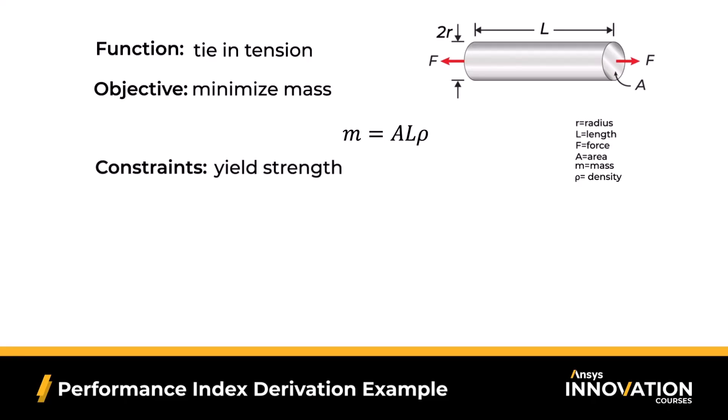The constraint? We have some minimum value for strength for the rope to meet our safety factor. For this derivation, we will use yield strength, though depending on the design, tensile strength can be used if available. The equation for yield strength is sigma sub y is equal to force F over area A.